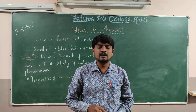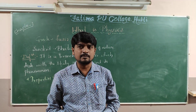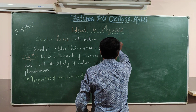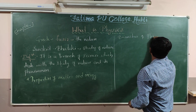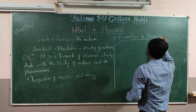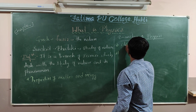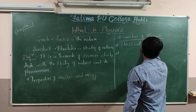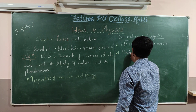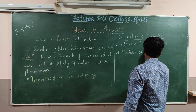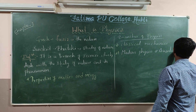Now if you go to the main branches of Physics — there are many branches. If I classify broadly, there are two main branches. Number one is Classical Mechanics. Second one is Modern Physics or Quantum Mechanics.